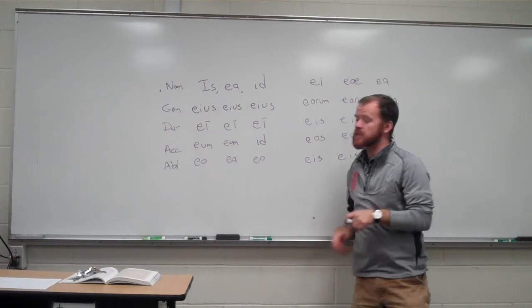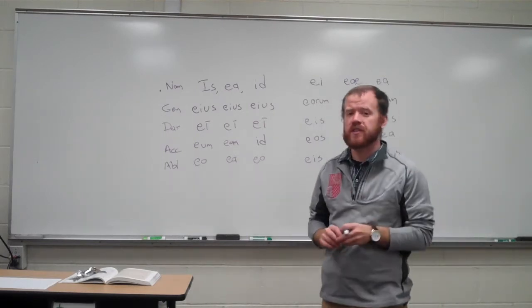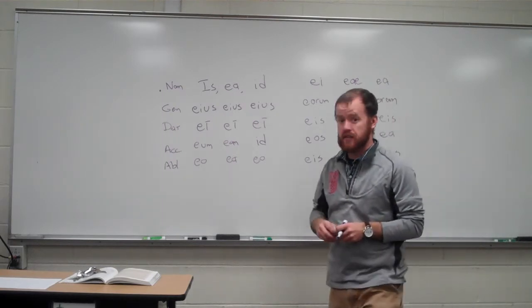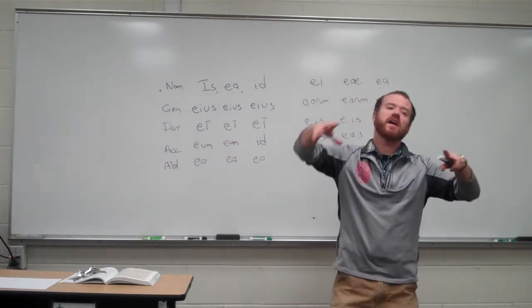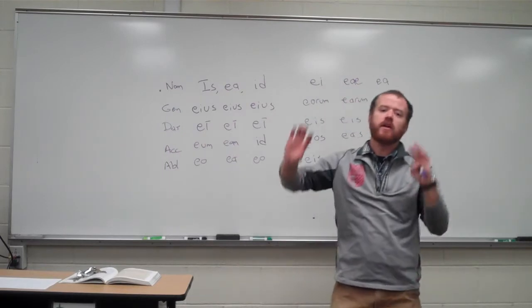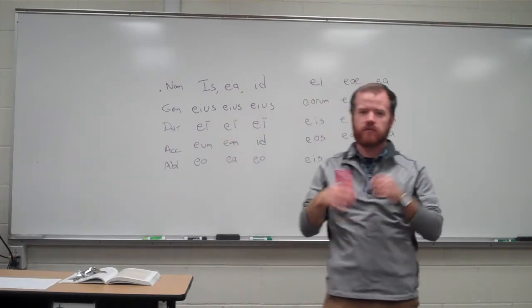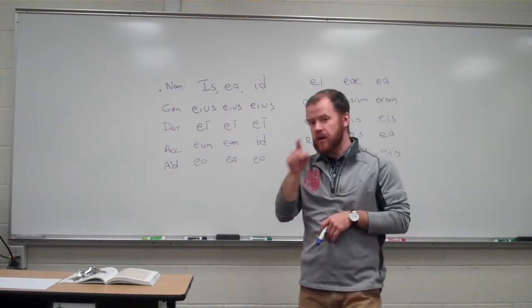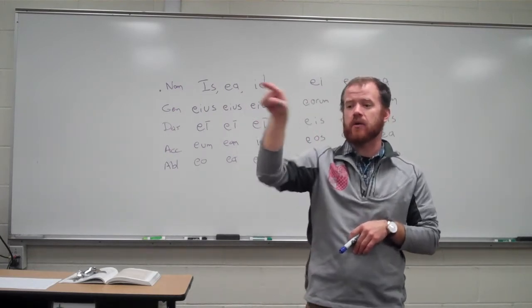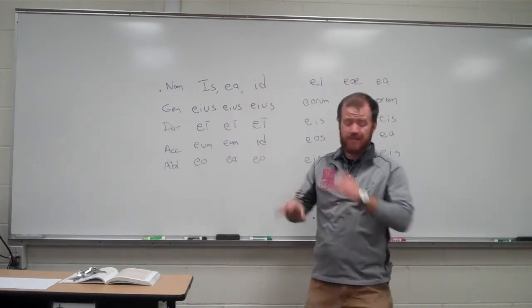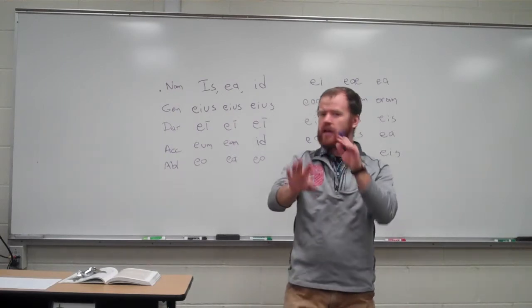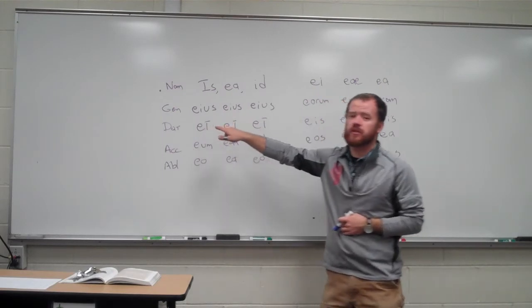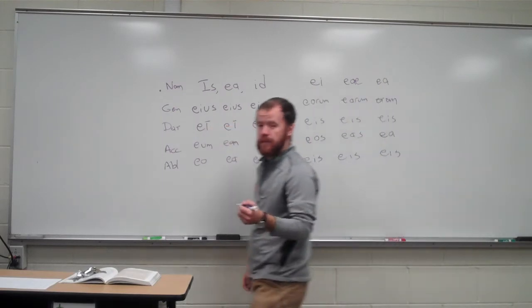Now as you're filling in this chart, hopefully you're noticing that this has a very similar pattern to hic, haec, hoc and ille, illa, illud. And that's because way, way back in archaic Latin, when Latin was just being formed and written down for the first times, is, ea, id used to be a demonstrative pronoun. It used to point out something that was happening. And sometimes you still see that in regular Latin. It's not as common, but sometimes.